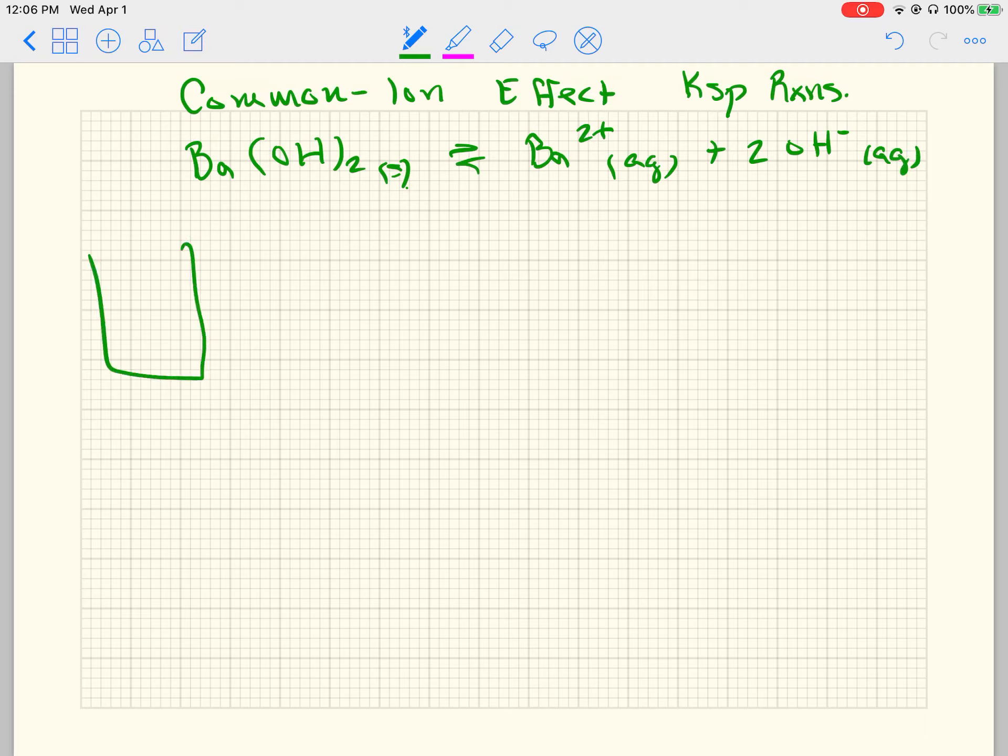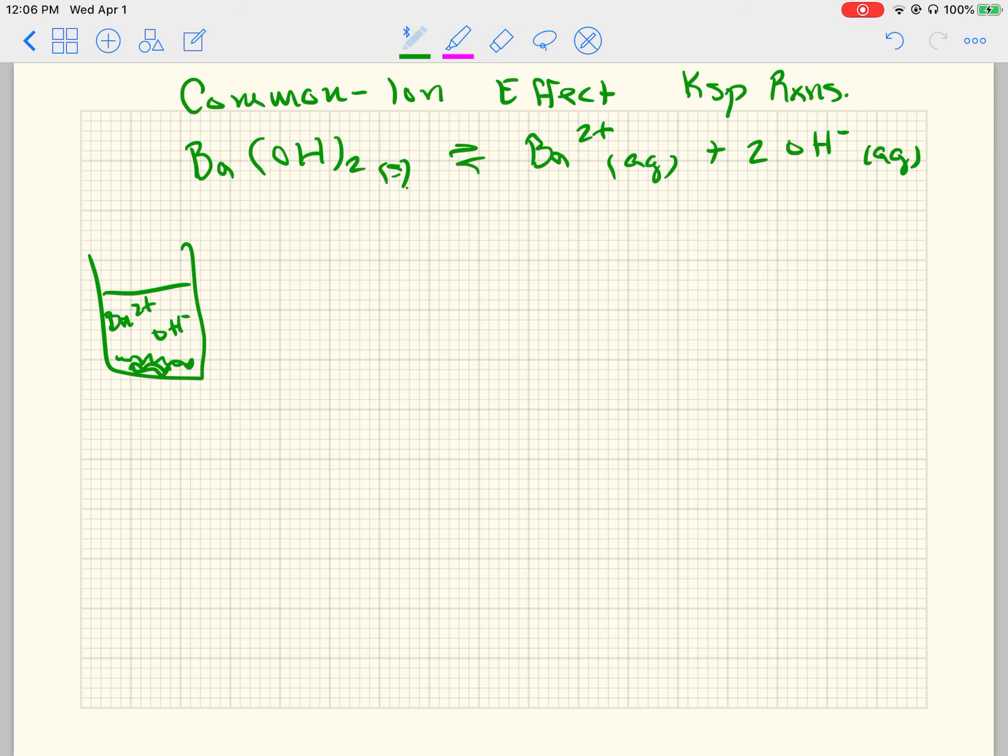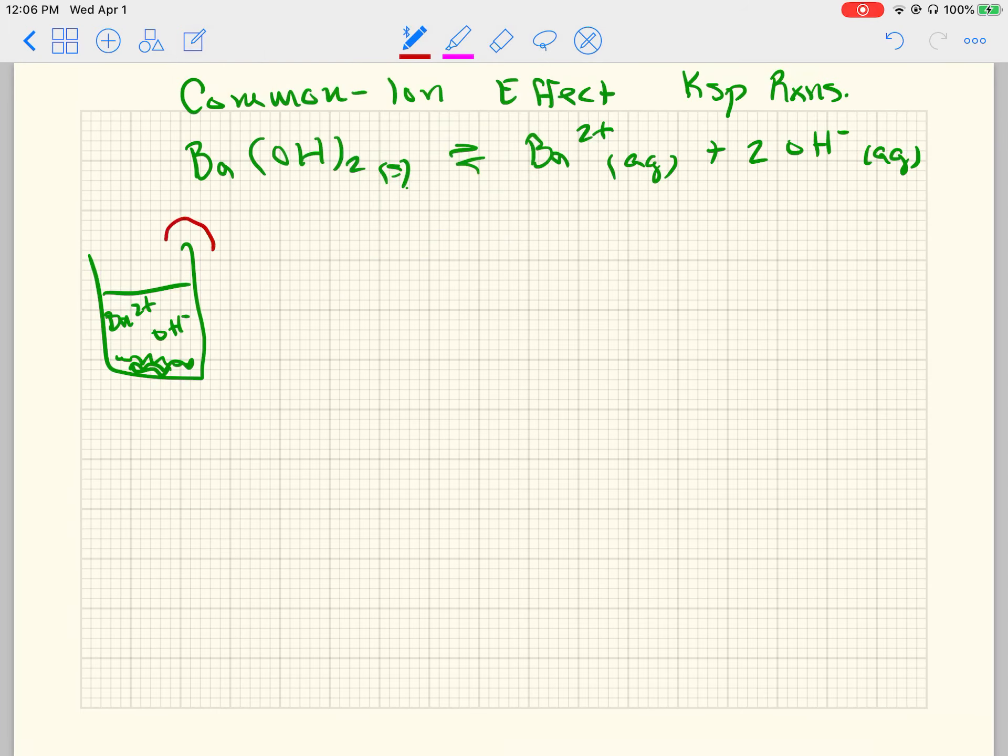If I had a flask of barium hydroxide, so I've got solid barium hydroxide, and then I've got barium ions and hydroxide ions floating around in solution, and to this flask, let's say that we add sodium hydroxide.